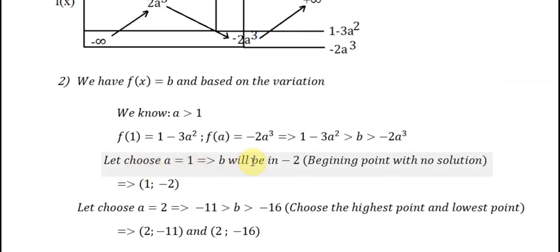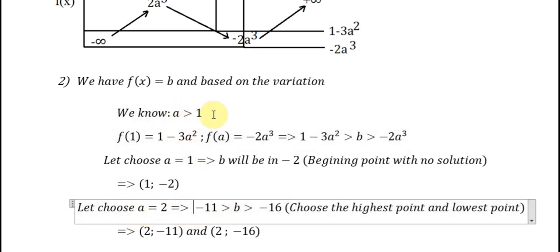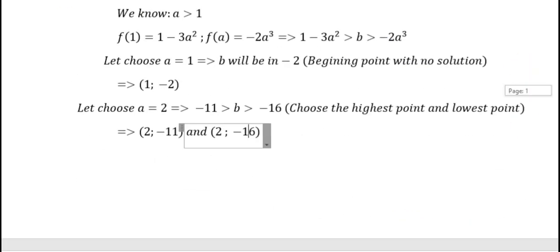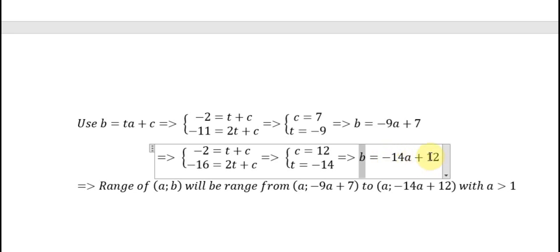On the next step, we choose a equal to 1, and b becomes minus 2. That is the boundary point. We put 1 into a to get minus 2. Then we choose a equal to 2, since 2 is greater than 1, and we get the range of b. We identify the highest and lowest points, then apply the linear equations: b equals minus 9a plus 7, and b equals minus 14a plus 12.